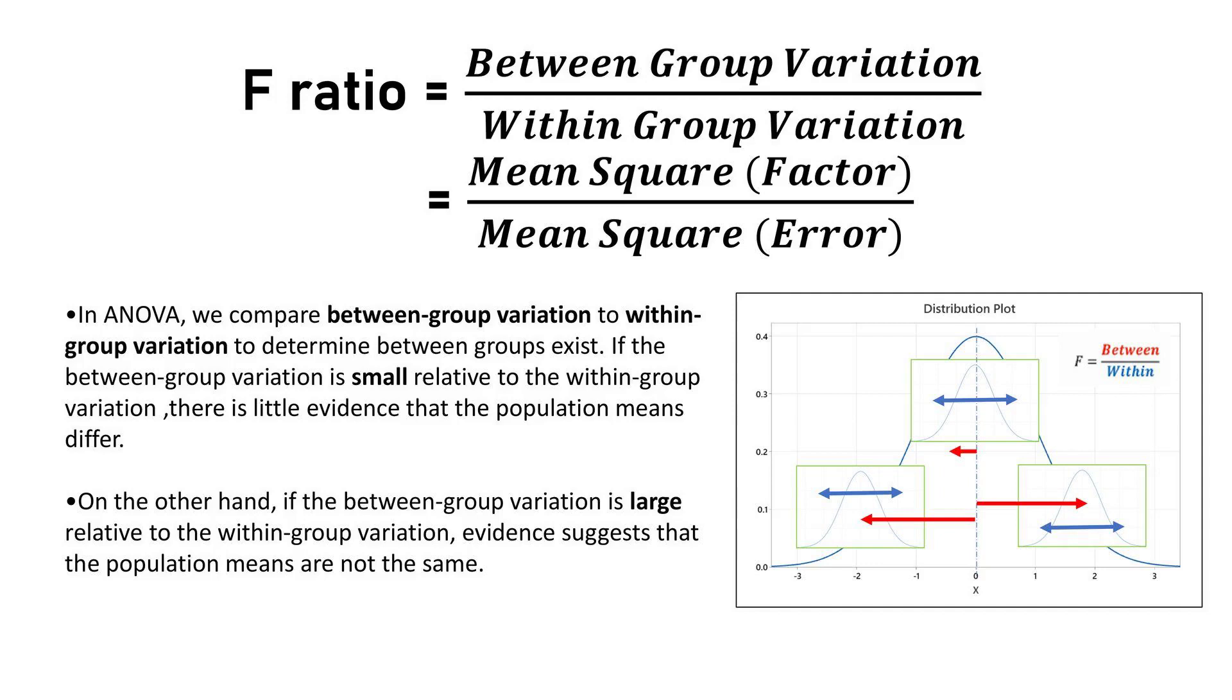In ANOVA, we compare between-group variation to within-group variation to determine if differences between groups exist. If the between-group variation is small relative to within-group variation, there is little evidence that the population means differ.